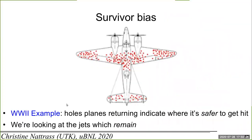This is like survivorship bias: in World War II a mathematician noticed that the army was looking at where holes were in returning planes and wanted to reinforce those areas — but they were only seeing the planes that returned. The holes in the returning planes told you where you could afford to take damage.